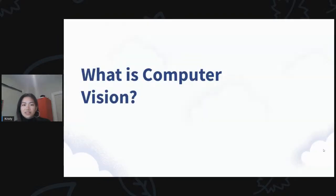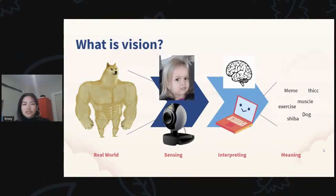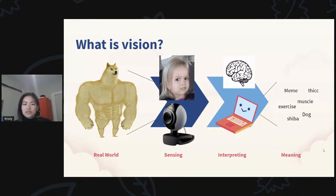What is computer vision exactly? A logical follow-up question is: what is vision? If we think about the way you and I experience vision, there is a real world from which we have sensors to get data — our eyes, for example. Our brains process that data from the sensors and extract meaning from it. For computer vision, we have an electronic parallel: electronic sensors like a camera or lidar get data from the real world, and then we write code to interpret that data and extract meaning.